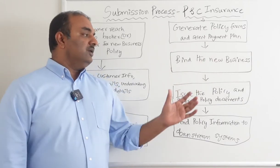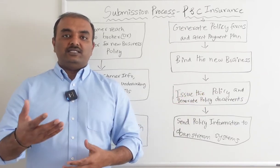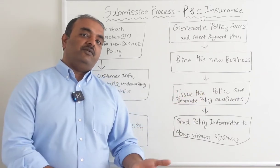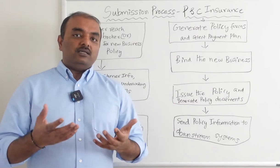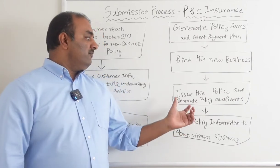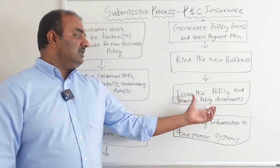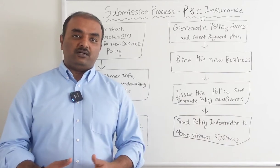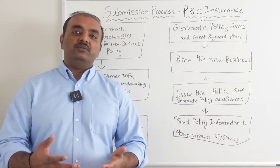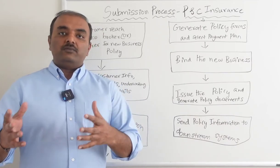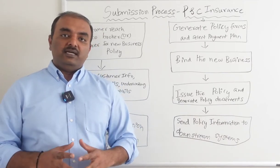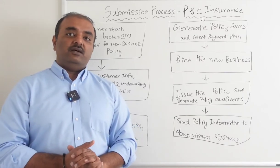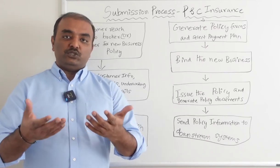Once we get all the required details — similar to the commercial auto example, once we get the VIN numbers for all the cars — we issue the policy and generate all the policy documents. All issuance documents and related documents are generated and sent to the customers, meaning the insureds.